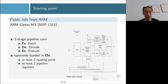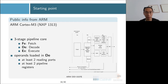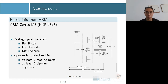Our starting point is the public information from ARM. We know the Cortex M3 is a three-stage pipeline core — the three stages are usually called fetch, decode, and execute. Something very interesting in ARM's figure is that the decode stage says it not only does instruction decoding but also performs register file reads — meaning it prefetches the necessary operands for the execute stage. This also implies there are pipeline registers between stages to temporarily store the prefetched operands, and at least two reading ports since most instructions have at least two operands.